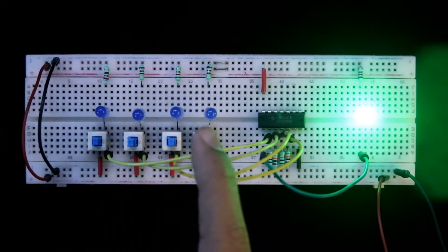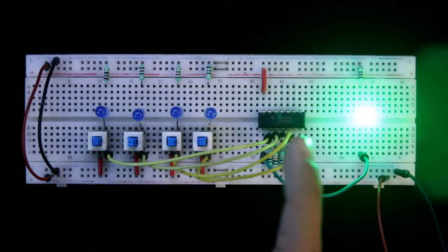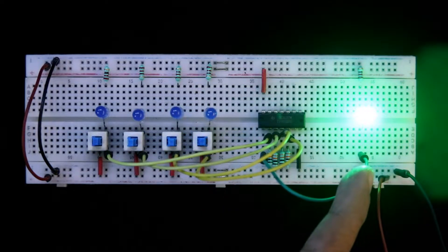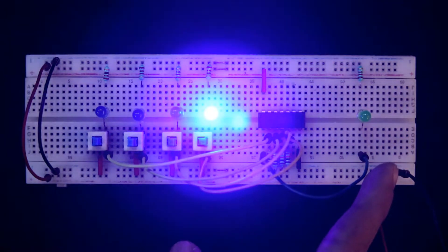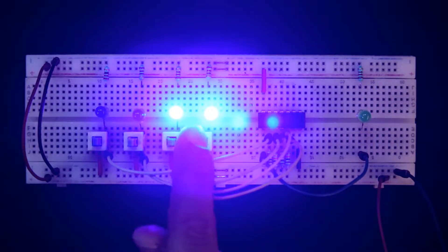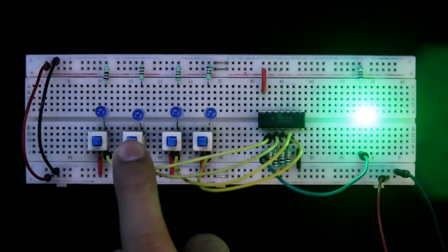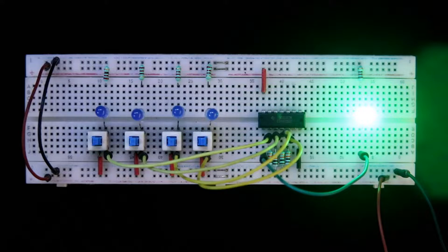Here as you can see, all the 4 inputs are 0, so we are getting output as HIGH or 1. If any input is 1, then our output will be 0. So today we are going to discuss this IC. Let's get started.